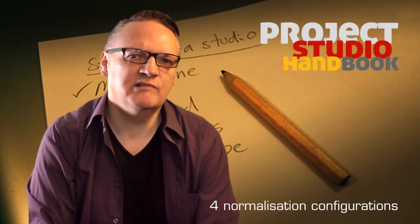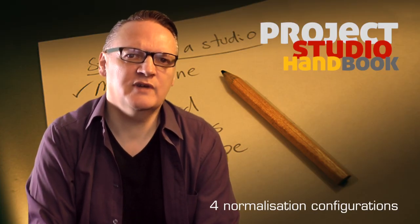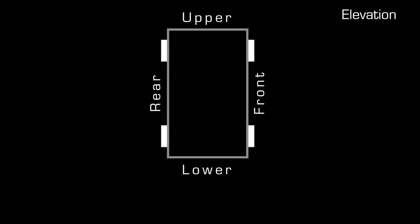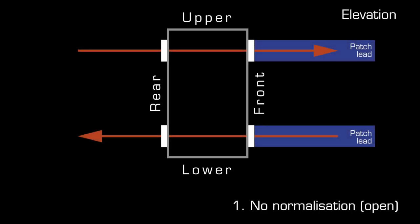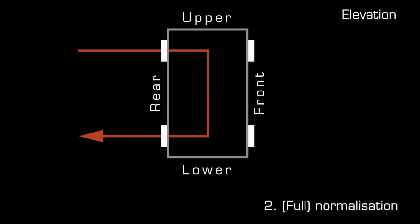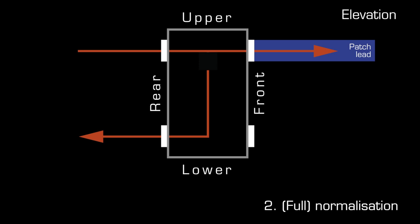There are four primary normalization configurations. One, no normalization: sockets are not connected. Two, normalization: vertically adjacent sockets are connected when no patch cord is present. When you insert a cord, the connection is broken.